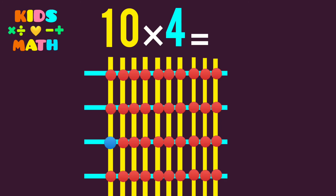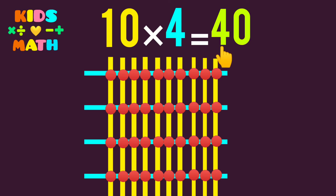We count: 1, 2, 3, 4, 5, 6, 7, 8, 9, 10, 11, 12, 13, 14, 15, 16, 17, 18, 19, 20, 21, 22, 23, 24, 25, 26, 27, 28, 29, 30, 31, 32, 33, 34, 35, 36, 37, 38, 39, and 40. So 10 times 4 equals 40.